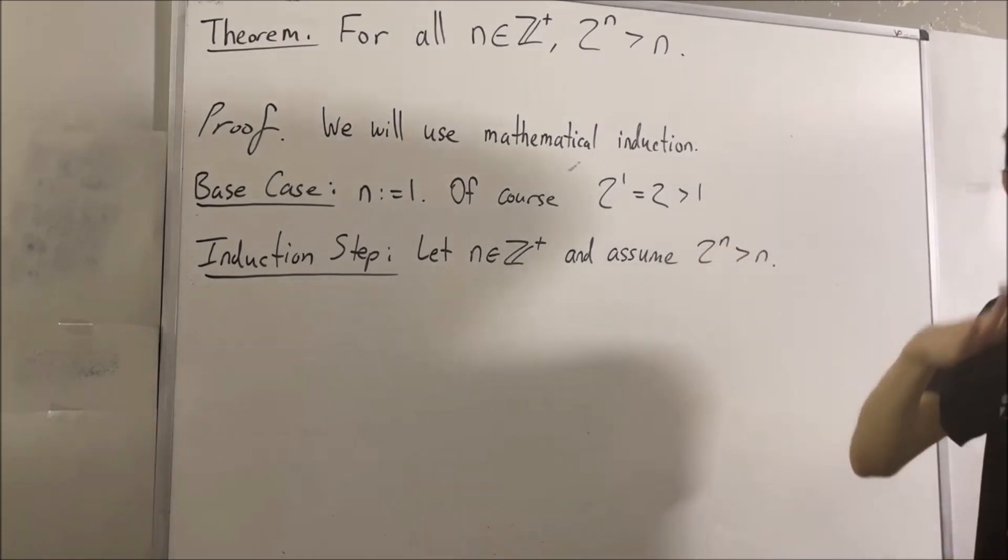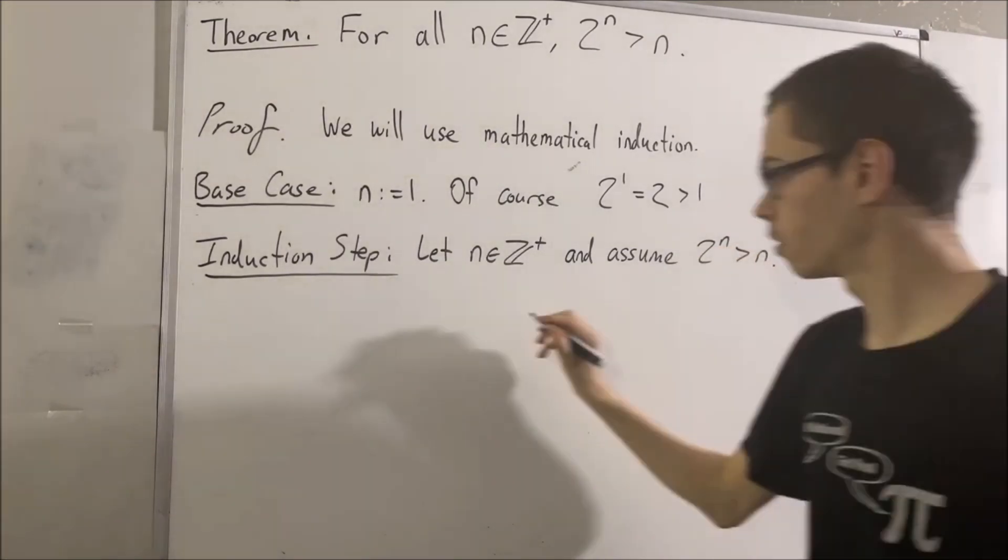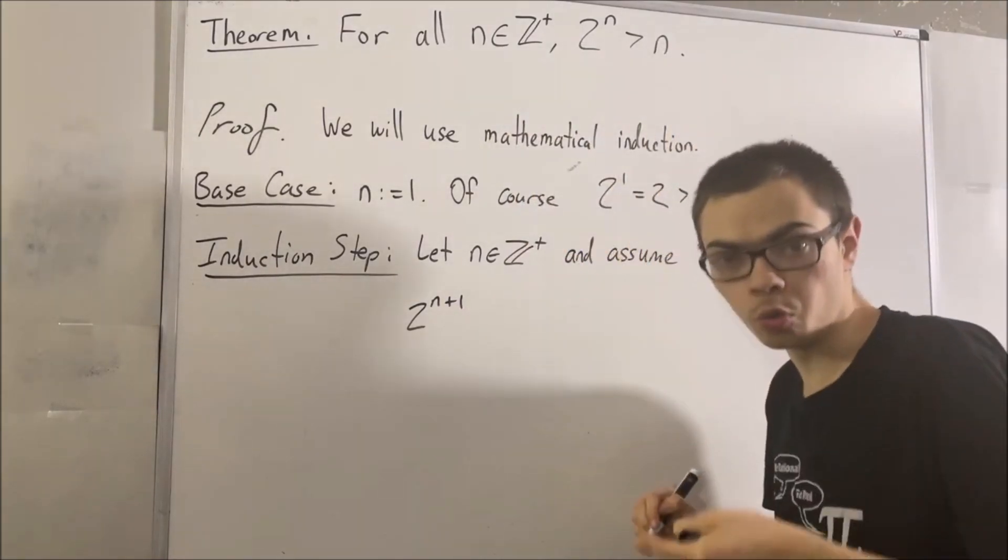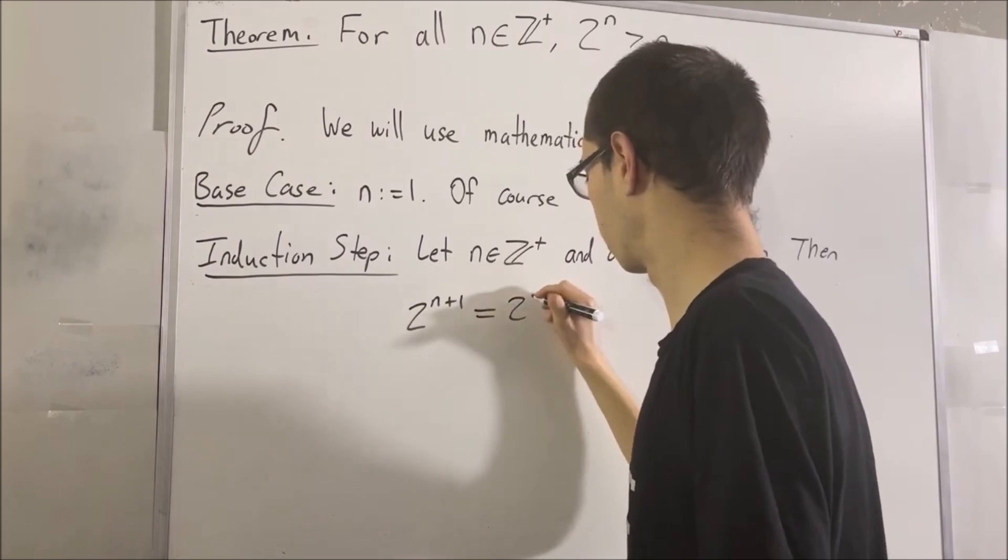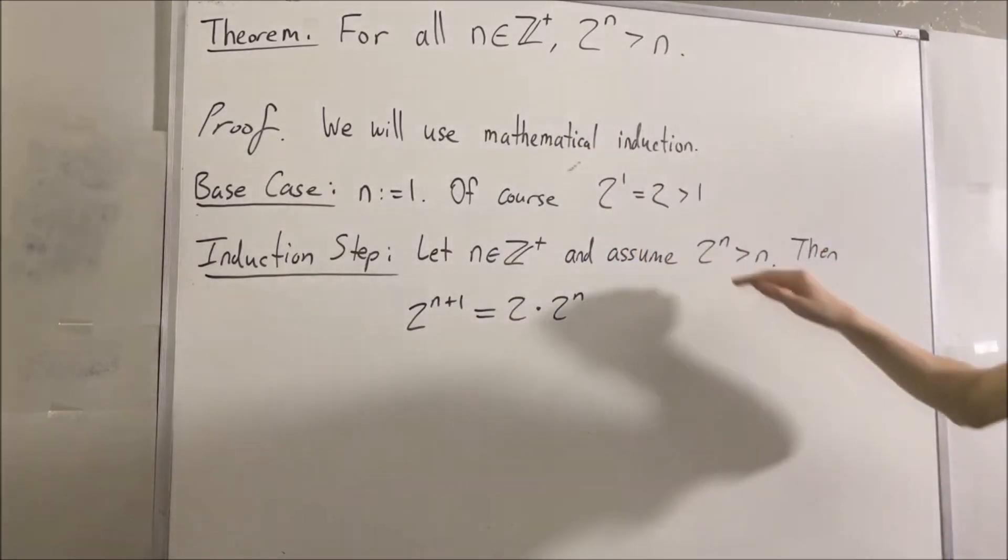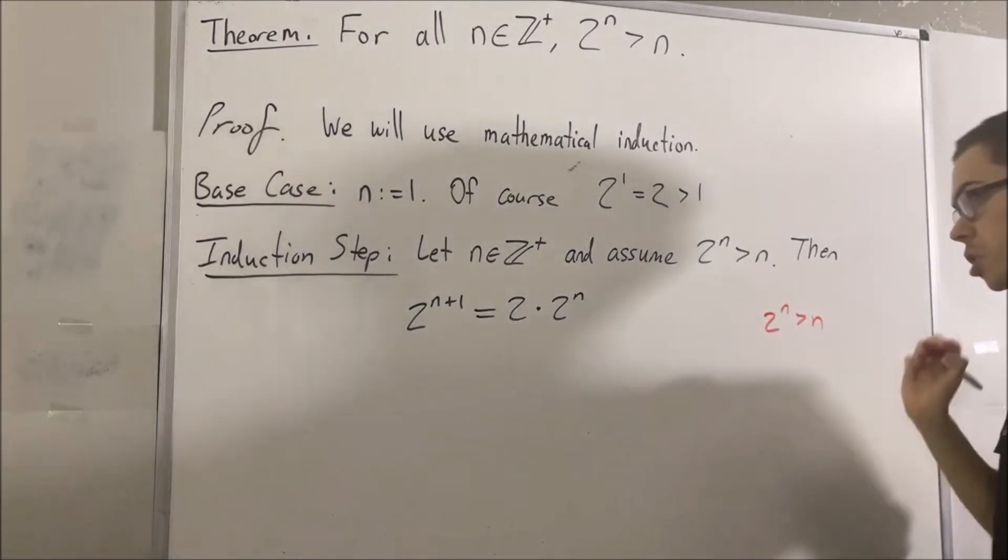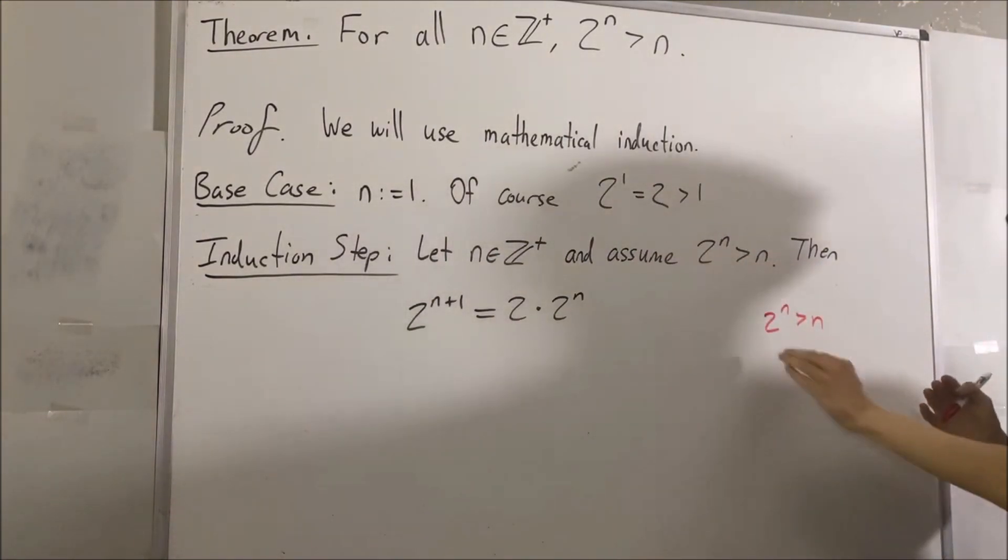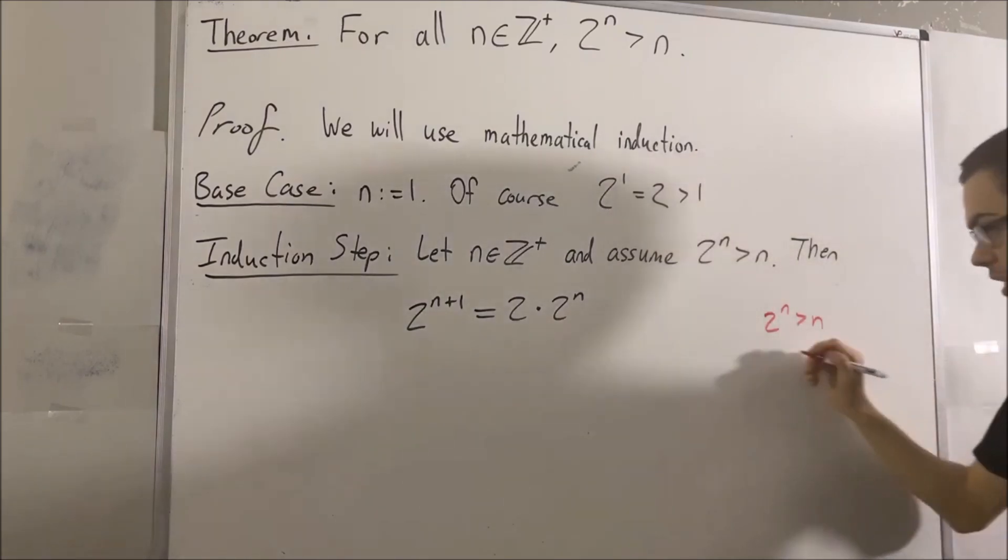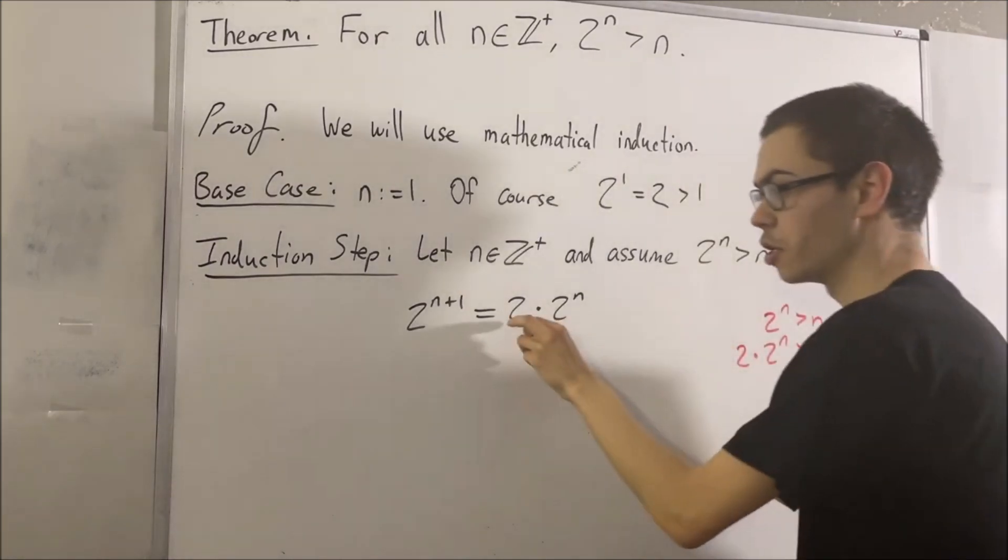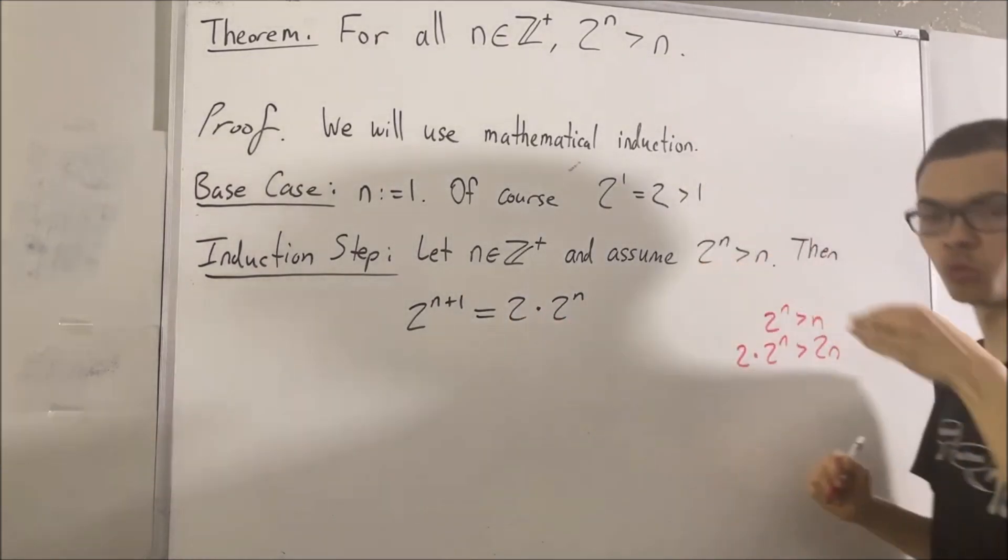And to see how we can show that, check this out. We know that 2 to the n plus 1 is equal to 2 times 2 to the n. But remember, by our induction hypothesis, 2 to the n is greater than n. So if we multiply 2 on both sides of this inequality, we get 2 times 2 to the n is greater than 2n.